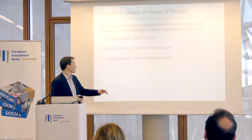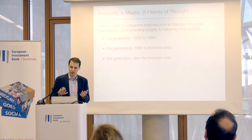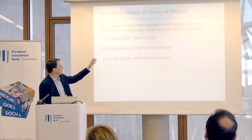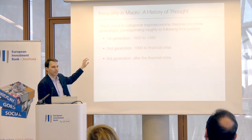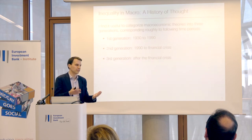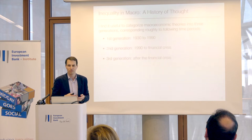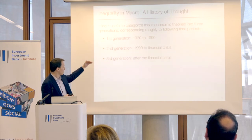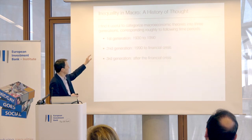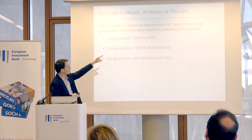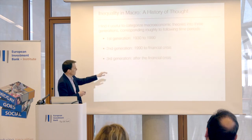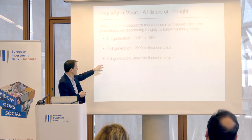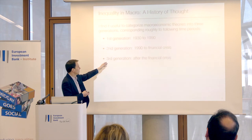So I'm going to try to give you a history of thought about the role of inequality in macroeconomics. I find it useful to categorize macroeconomic theories into three generations, starting from the birth of macroeconomics during the Great Depression with John Maynard Keynes. The first generation runs roughly from the 1930s to the 1990s, the second generation from 1990 to roughly the financial crisis, and things have been changing in the last ten years after the financial crisis.